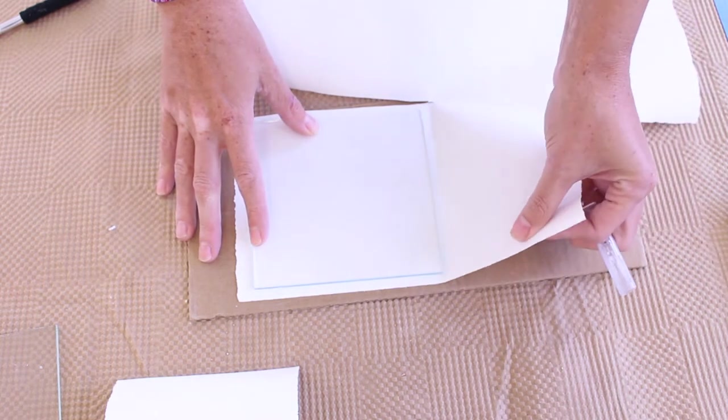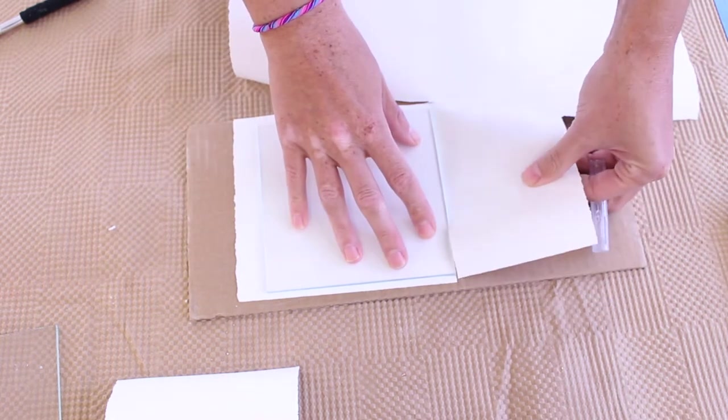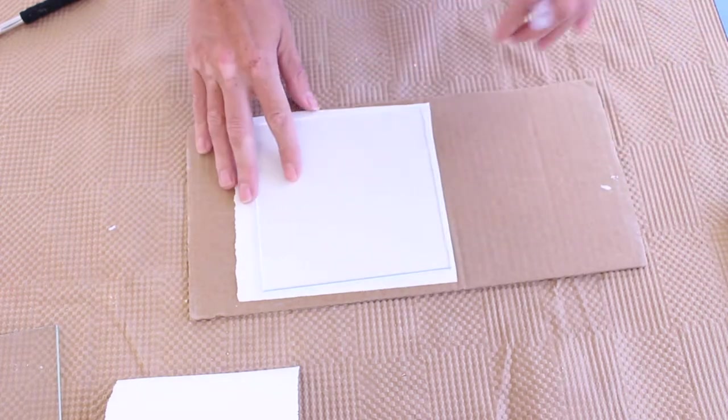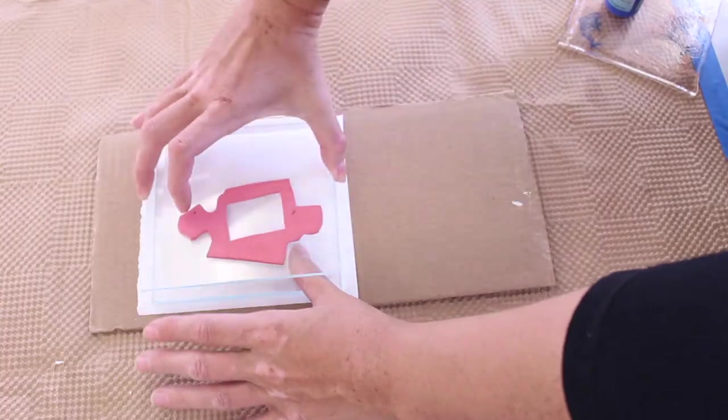And then I just used an exacto to cut a slightly larger piece of kiln paper which will be what I build my piece on.